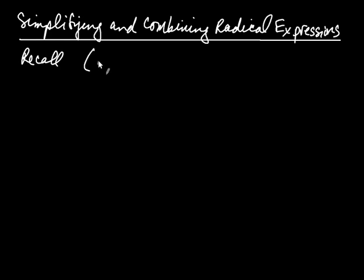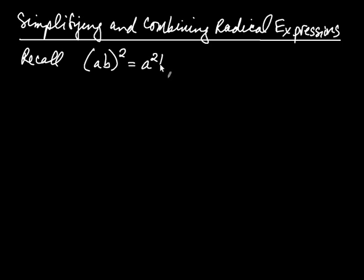So first of all, I would like you to recall that if you take a times b and you square the whole thing, because it's multiplication here, you square a and you square b. So this is equal to a squared b squared, where a and b are any two numbers.